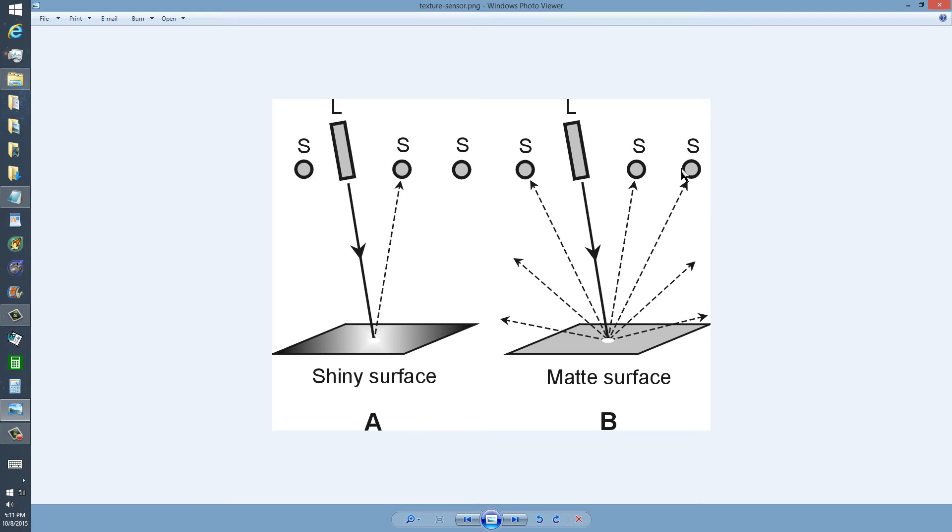That's how a robot can tell the difference between a shiny surface, in which case it should go jump in a lake, or a matte surface, in which case it should go fly a kite. The standard circuitry is included but not shown in this diagram.